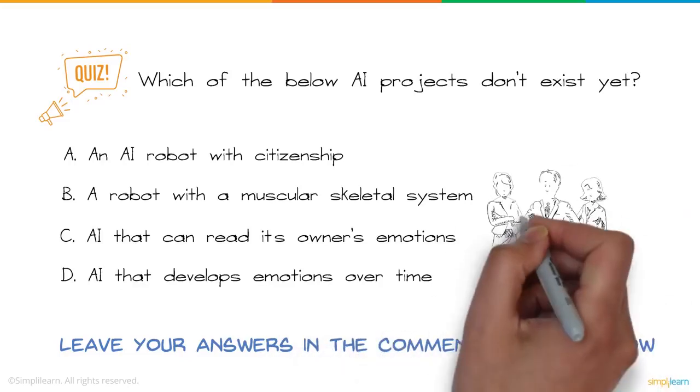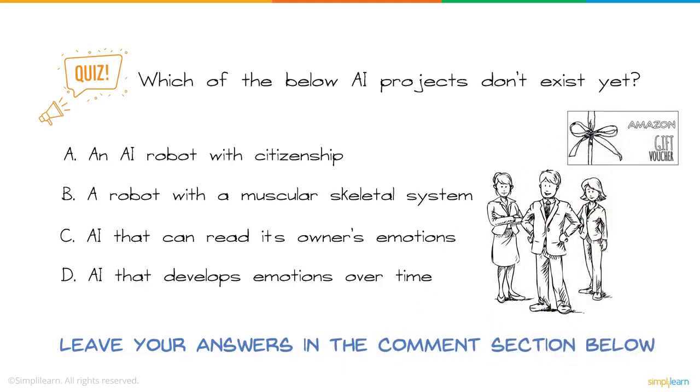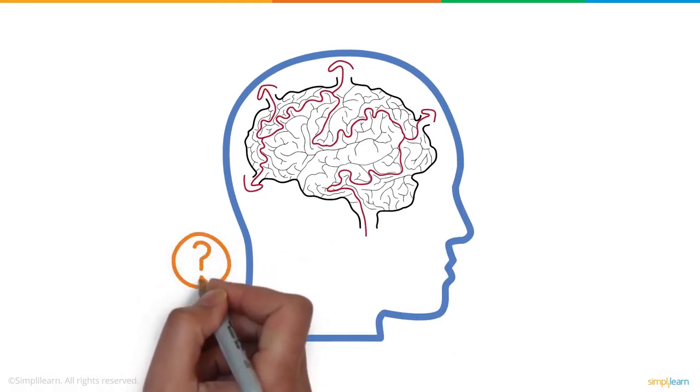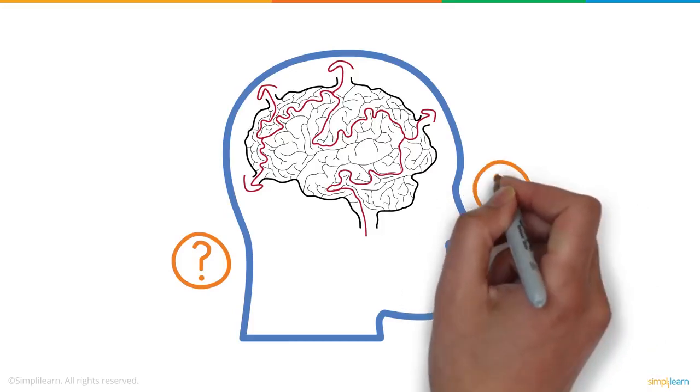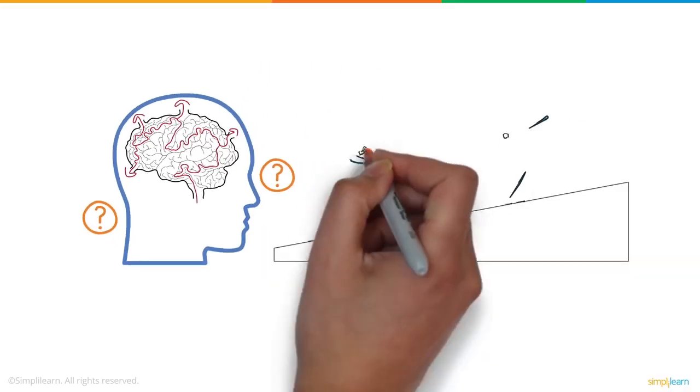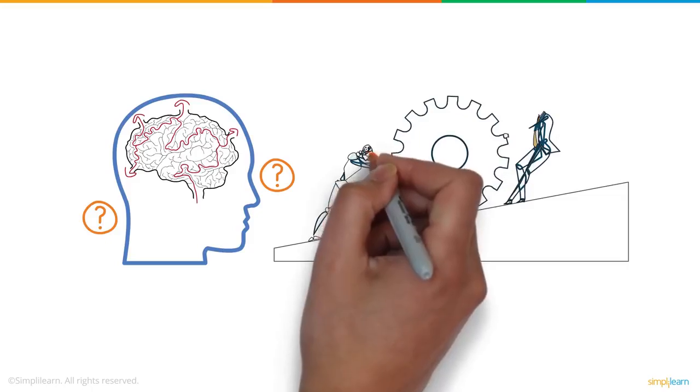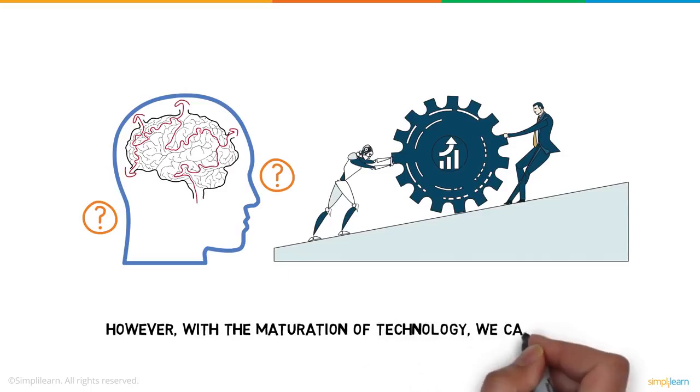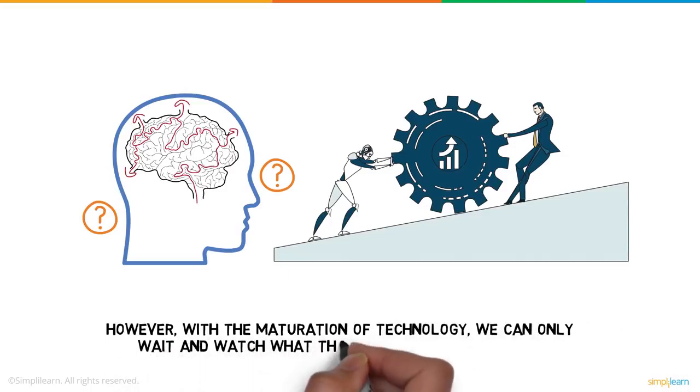Three lucky winners will receive Amazon gift vouchers. Since the human brain is still a mystery, it's no surprise that AI too has a lot of unventured domains. For now, AI is built to work with humans and make our tasks easier. However, with the maturation of technology, we can only wait and watch what the future of AI holds for us.